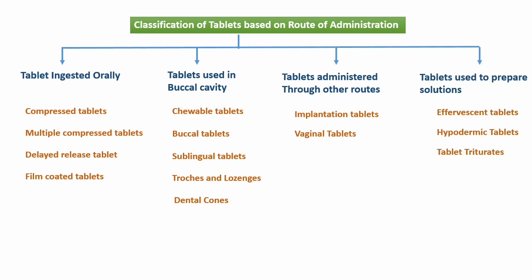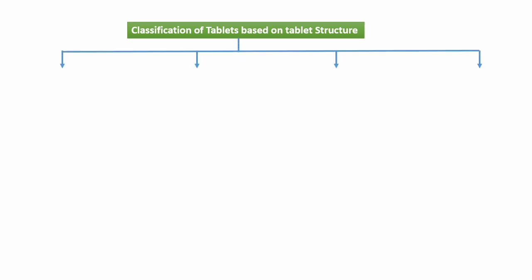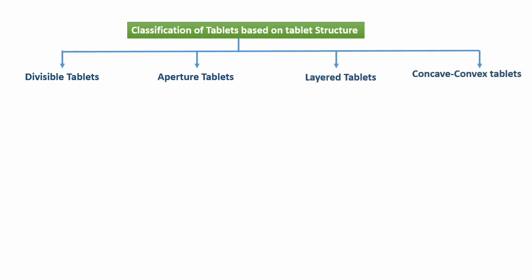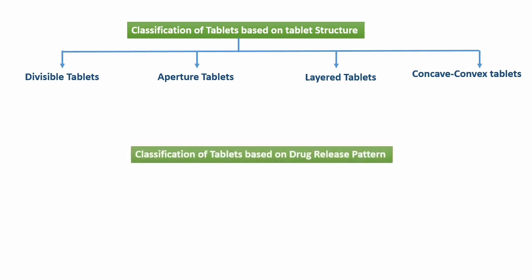Another classification of tablets is based on tablet structure — यानि tablet को structure के आधार पर classify किया जाता है। इसमें different classes हैं: divisible tablets, core tablets, aperture tablets, layered tablets, and concave/convex tablets.